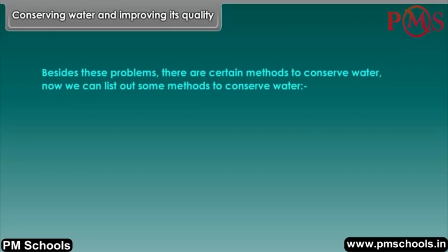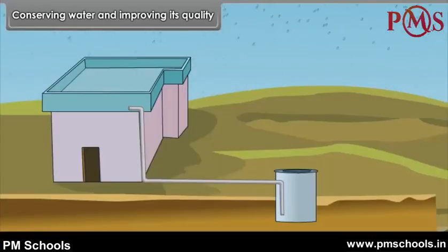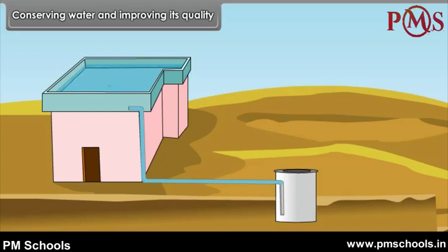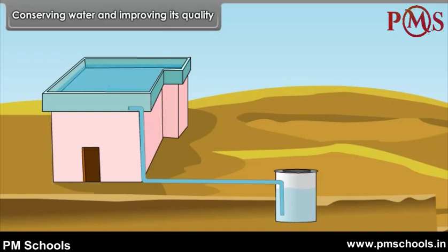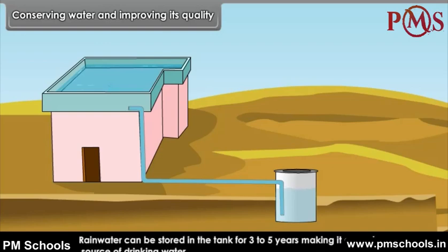Besides these problems, there are certain methods to conserve water. We can list out some methods to conserve water. One such method is rainwater harvesting. Methods for keeping the rainwater in reserves are termed as rainwater harvesting. Rainwater can be stored in a tank for 3 to 5 years, making it a regular source of drinking water.